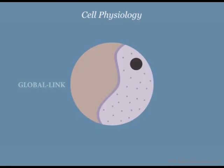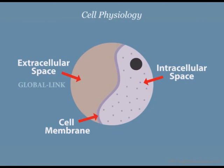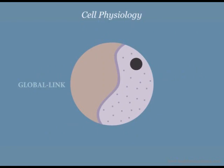The raw materials required for these functions are obtained from the external environment. During the physiological processes, waste materials are generated. This waste cannot remain within the cell and has to be removed. The plasma membrane is at the heart of this movement of materials in and out of the cell. In this chapter, we shall focus on this movement of materials in and out of the cell, but first we look at the structure of the cell membrane.